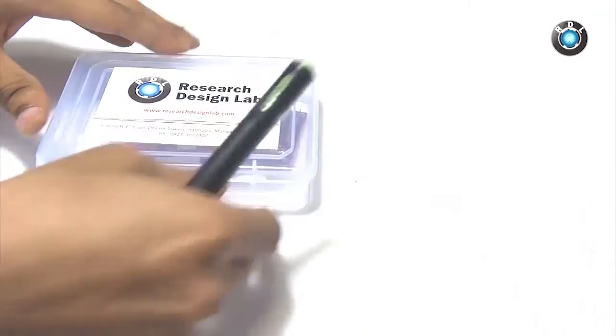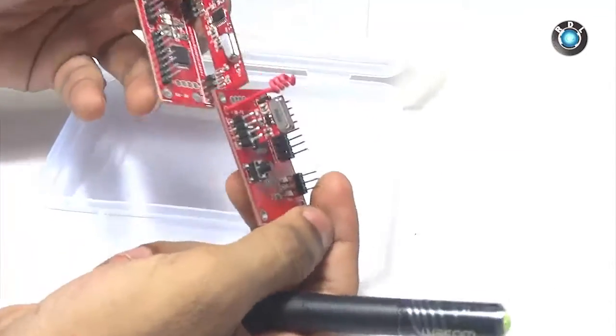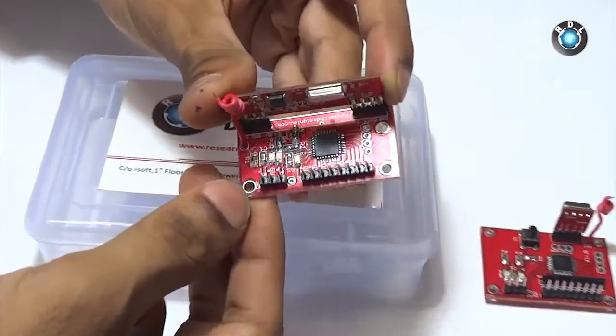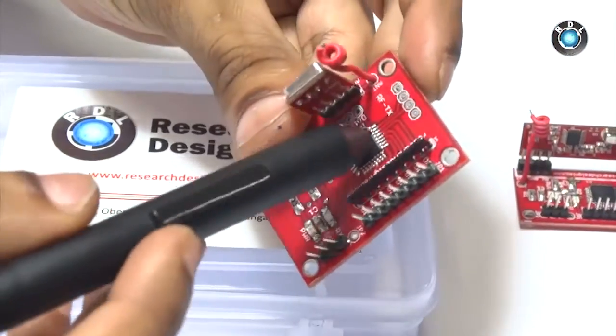In this kit here, we could find a pair of RF modules. One will be your RF receiver and the other one will be your RF transmitter. This one is your RF receiver and this is your RF transmitter.